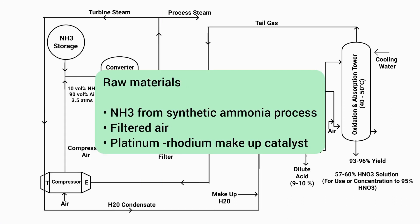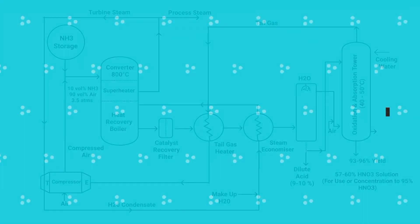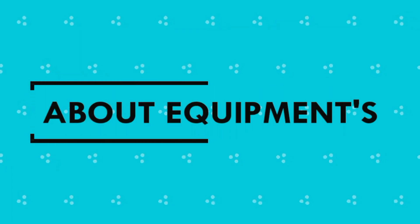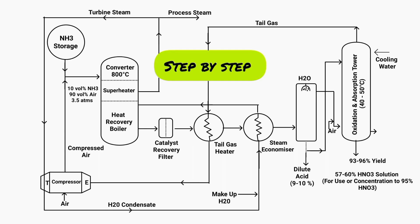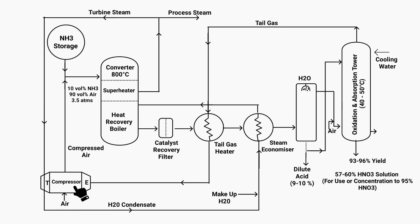To make nitric acid, it mainly requires synthetic ammonia, filtered air, and a platinum-rhodium catalyst. Ammonia is stored in an ammonia storage tanker. The compressor compresses the air in the process, and is driven by a turbine connected on one side, while an expander on the other side drives out the exhaust gas.